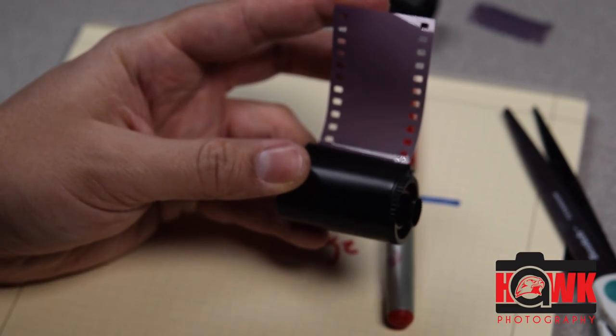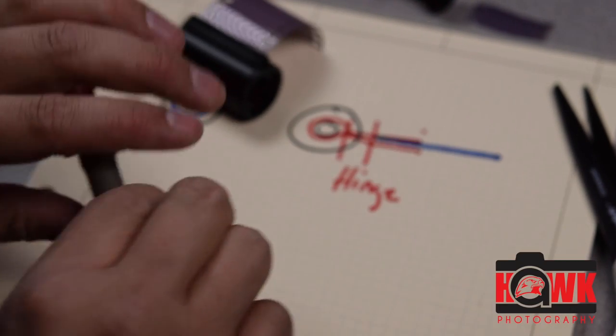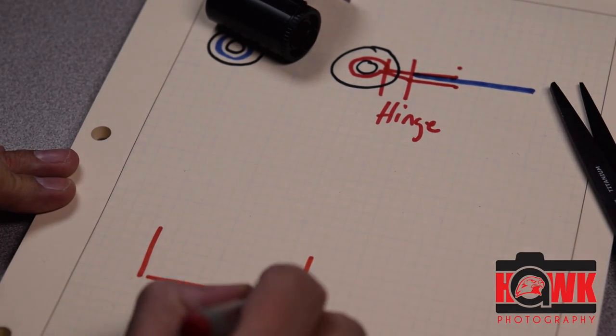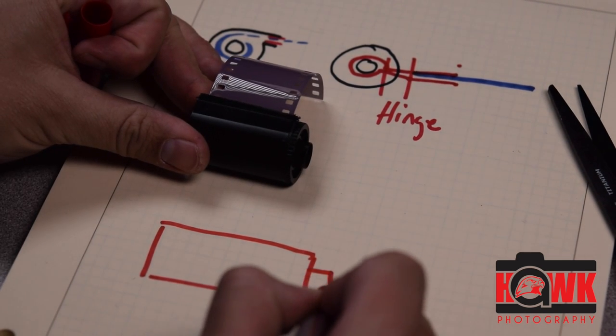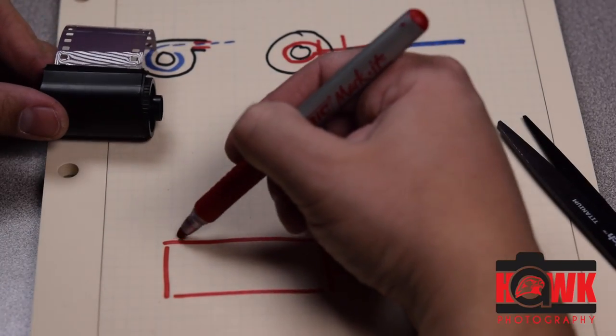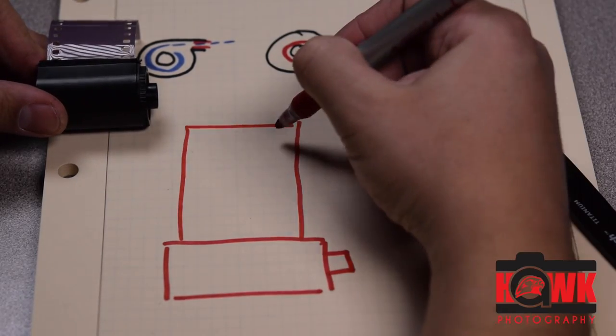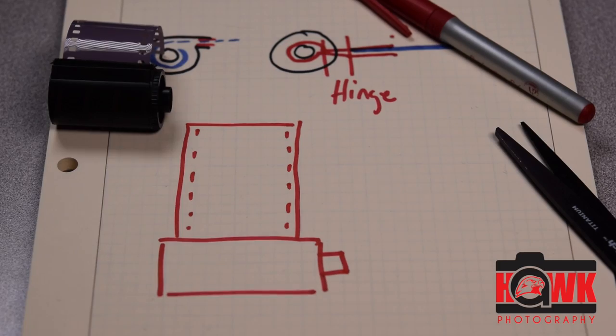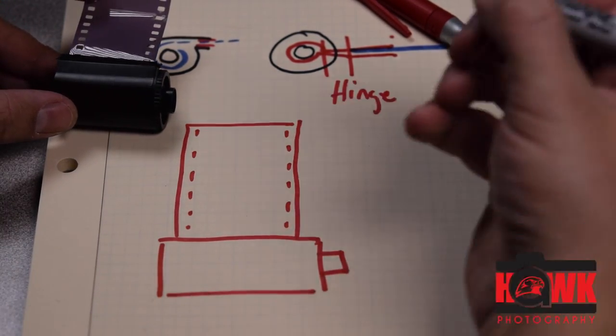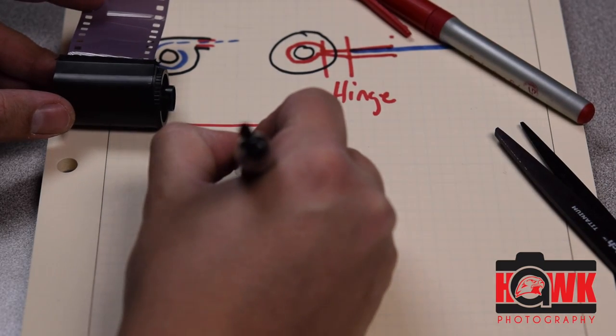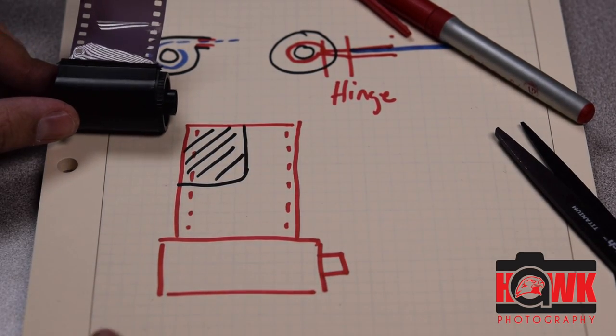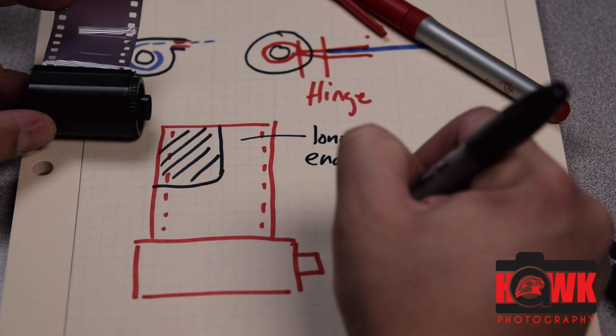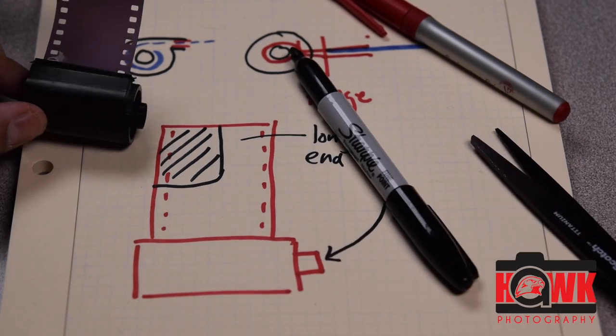This will not load into my camera as is. I need to cut a notch here. I'm going to show you what that looks like on paper first. So from the side view, I have my canister. This is the long end. I have my film coming out this way. Little holes coming down the side. And I need to come in and cut a rounded corner notch out of this piece of film. And it's going to look something like this. This part will be removed. What I want you to notice is the long end of the film is the same on the same side as the long end of the spool. That's how I remember when I go to cut this.